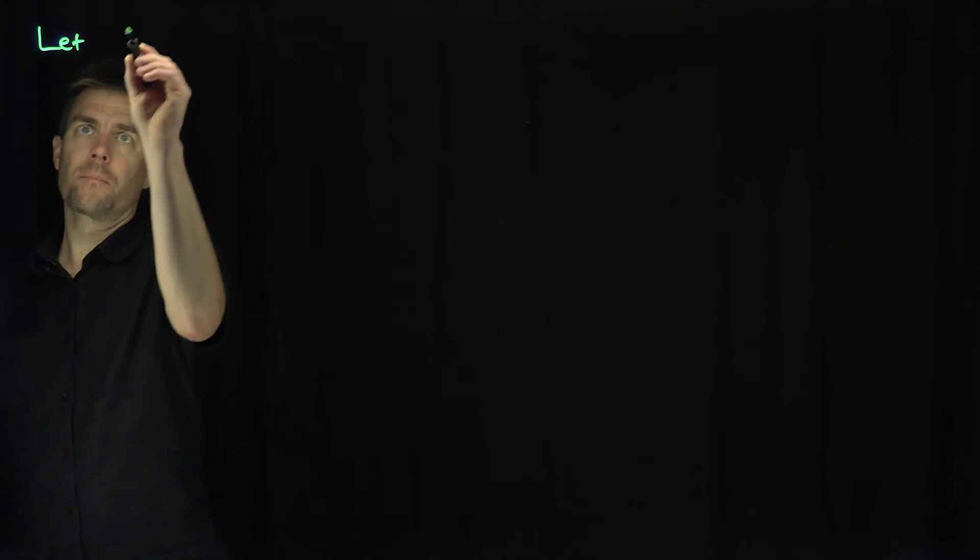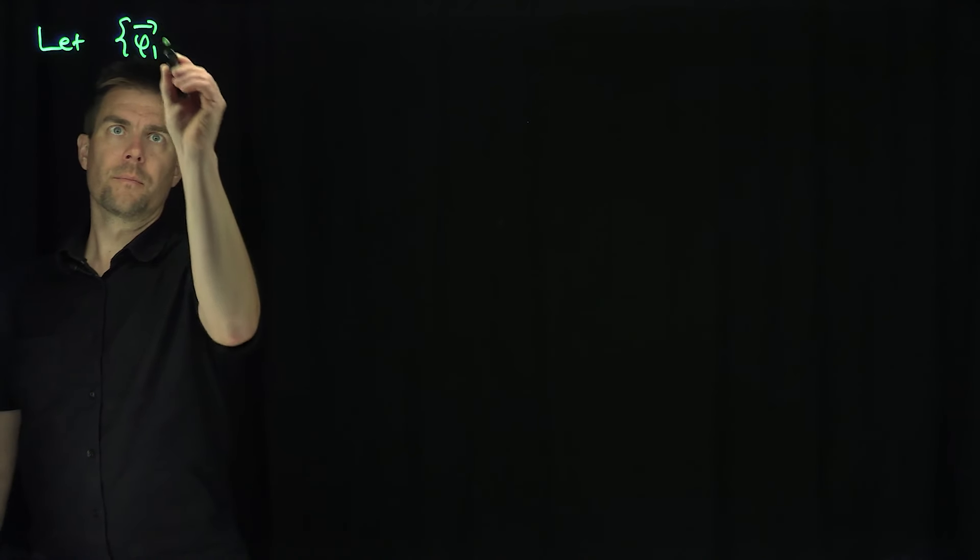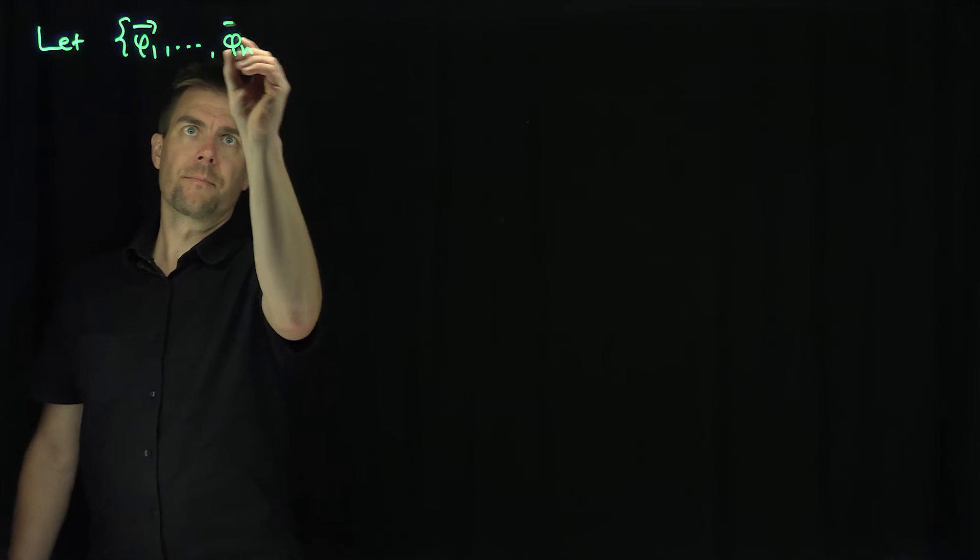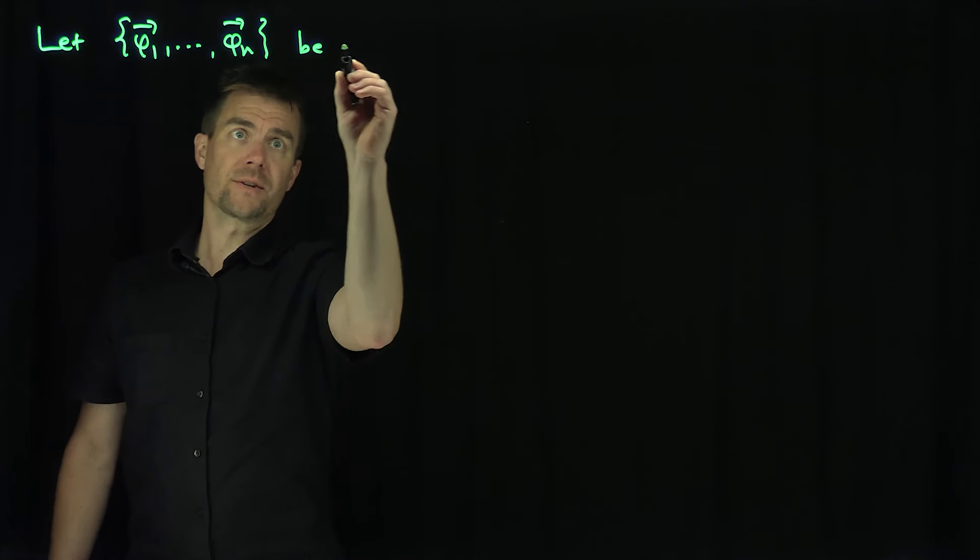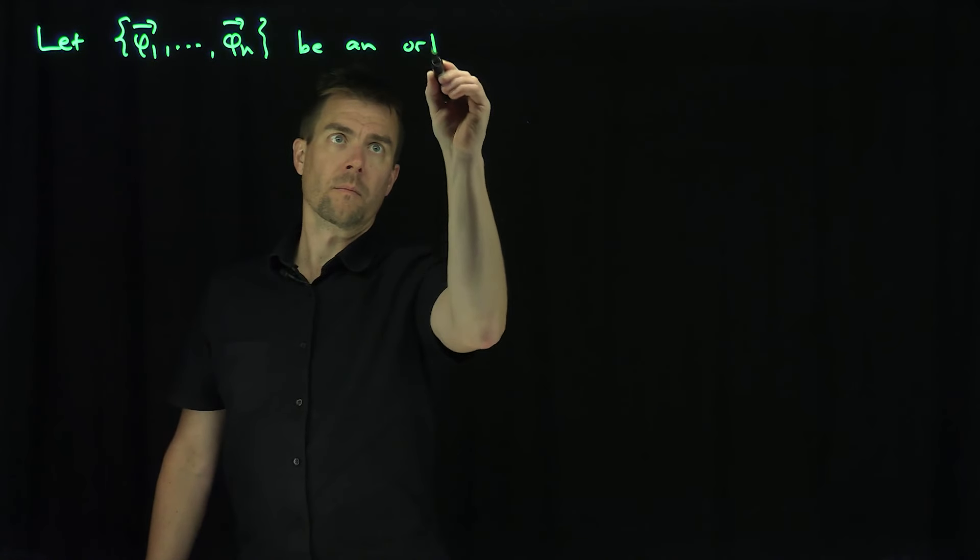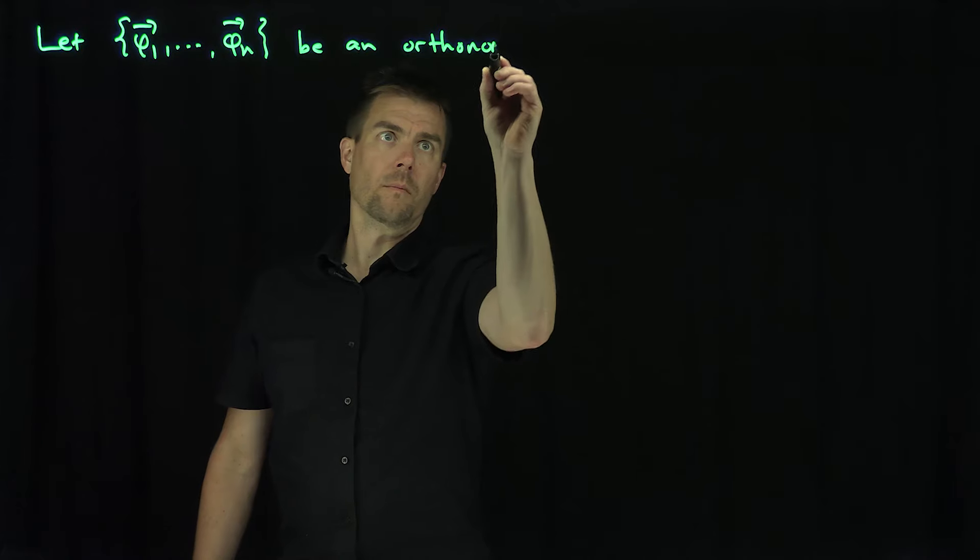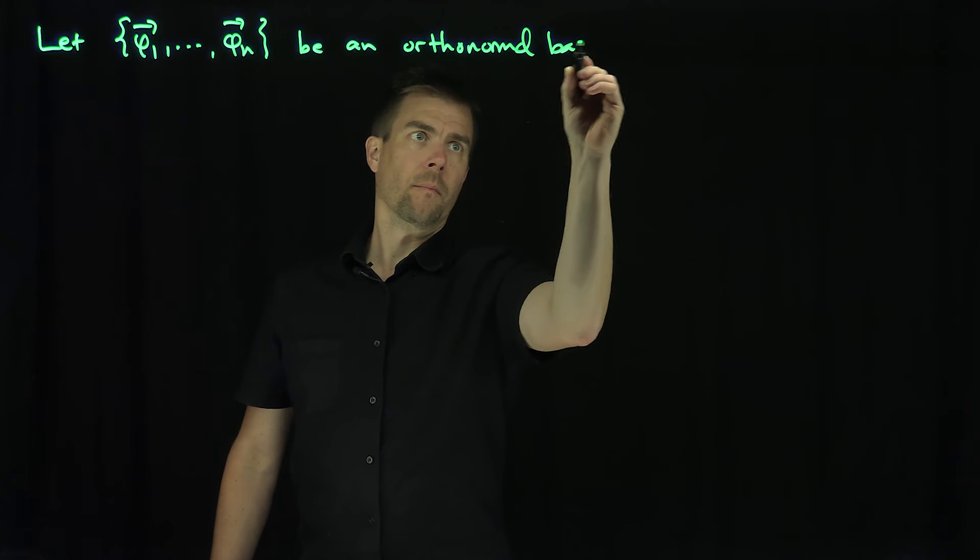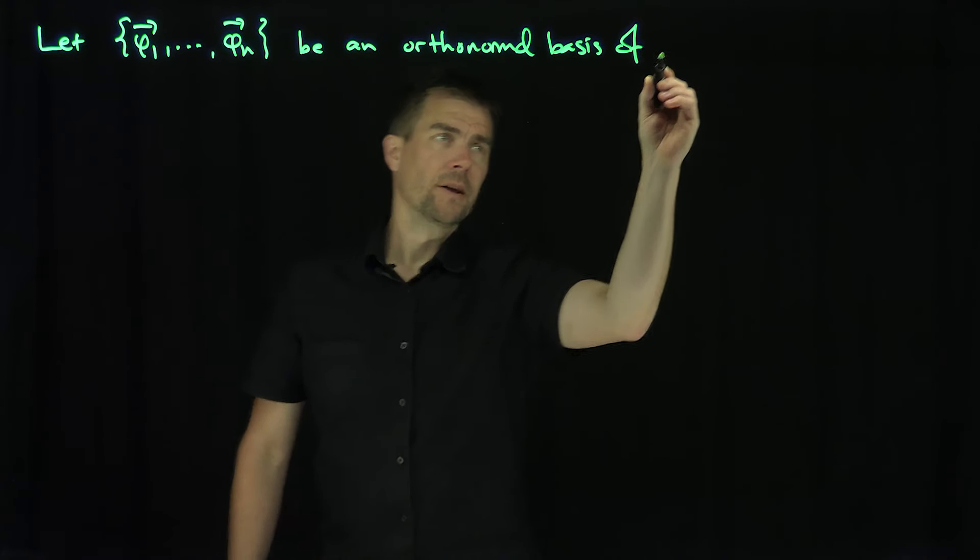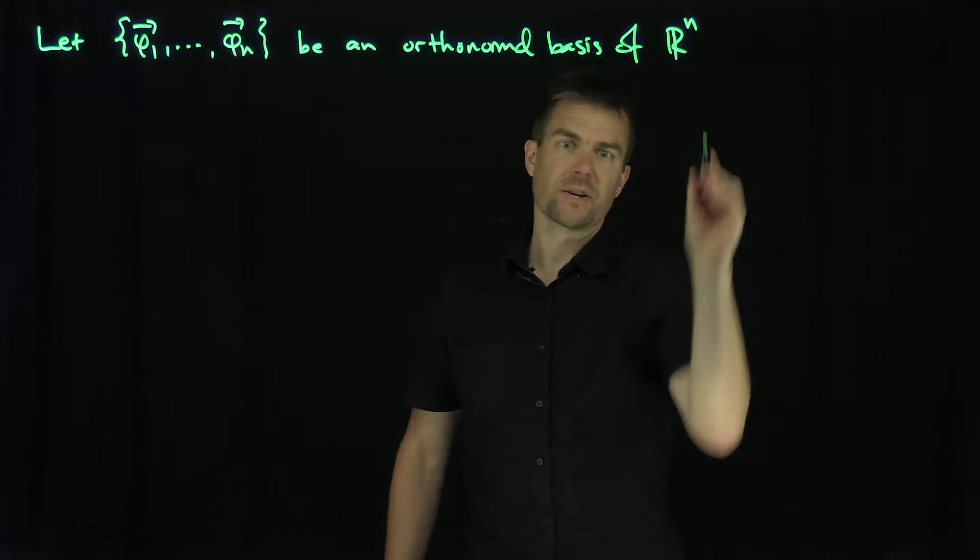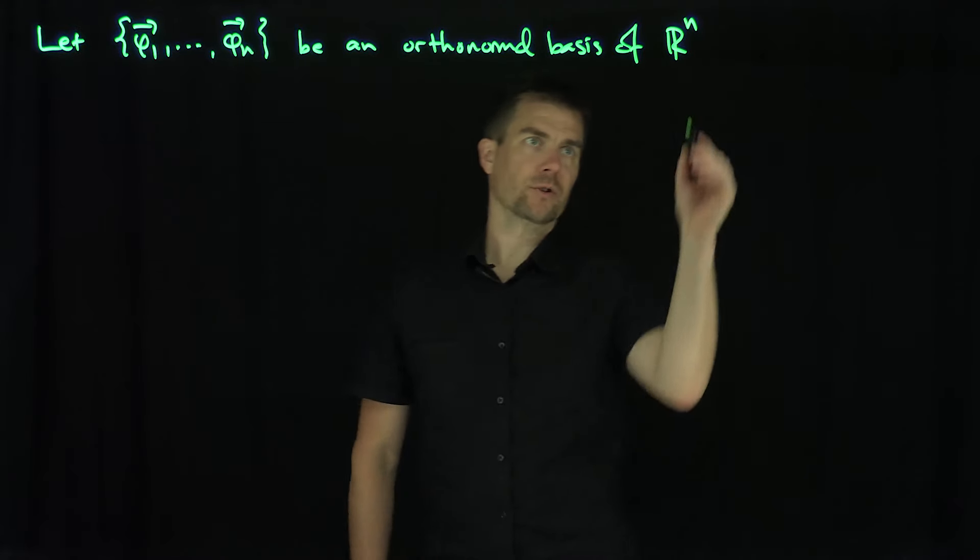Let's let phi_1 through phi_n be an orthonormal basis of R^n. It can be any finite dimensional vector space. It actually won't change anything if it's a finite dimensional vector space.